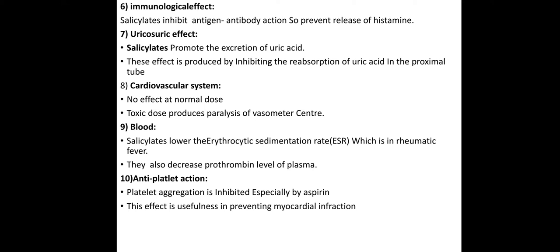Note: at normal doses, salicylates have certain cardiovascular effects, but overdose can cause paralysis of respiratory centers. Salicylates lower the ESR — erythrocyte sedimentation rate — which is elevated in rheumatic fever. They also decrease the prothrombin level of plasma. Platelet aggregation is inhibited especially by aspirin, which prevents clot formation. This anti-platelet action is useful in platelet disorders and patients diagnosed with platelet issues are given aspirin.